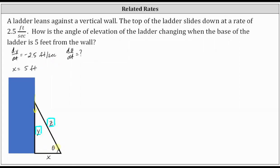Using the angle theta and these two sides of the right triangle, notice how Y is the opposite side and Z is the hypotenuse. Therefore we are going to use the equation: sine theta equals Y divided by Z.